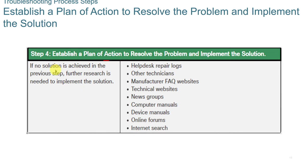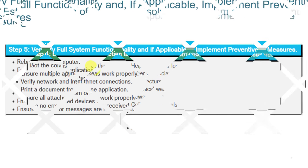For step four — establishing a plan of action — if no solution is found in the previous step, you may need to do further research. Escalate the help desk ticket to a higher level, check the manufacturer's website, look at technical websites, and search online forums to see if others are having the same problems. For example, if a recently updated driver is causing issues, you might need to roll it back.